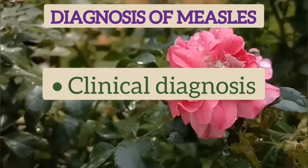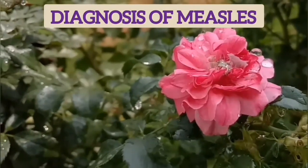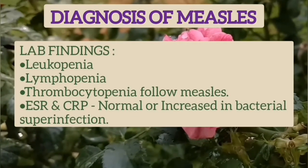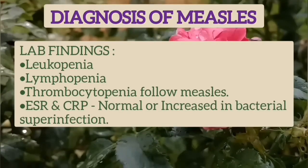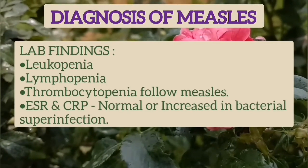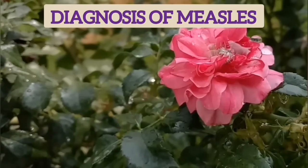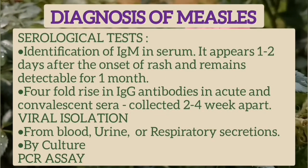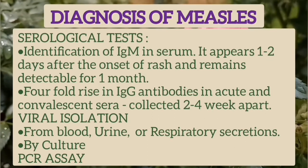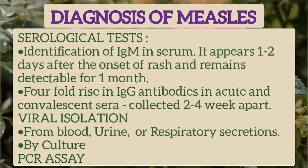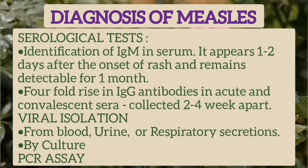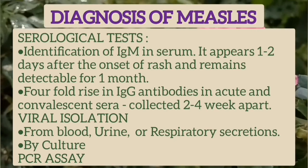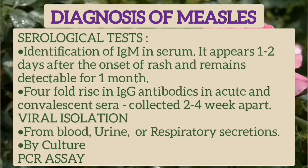Measles is a clinical diagnosis. Lab findings include leukopenia or lymphopenia, and there may be thrombocytopenia. ESR and CRP are usually normal but may be increased in bacterial superinfection. Serological tests include identification of measles IgM in serum, which appears 1 to 2 days after the onset of rash and remains detectable for 1 month, or a 4-fold rise in IgG antibodies in acute and convalescent sera. Virus can be isolated from blood, urine, or respiratory secretions by culture, and PCR assays are also available.